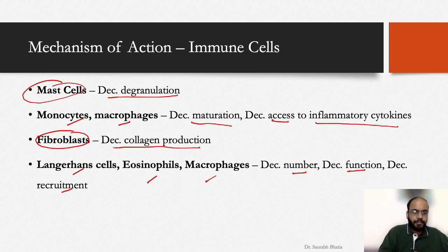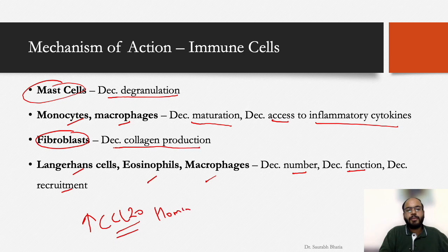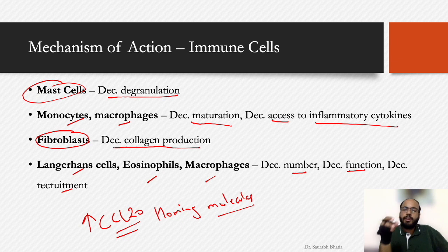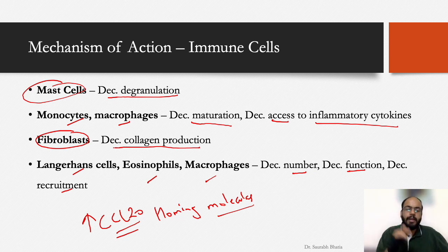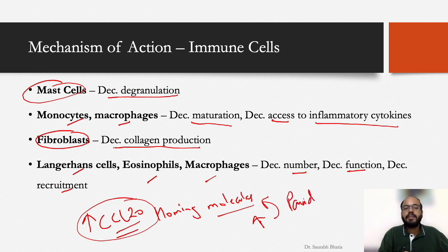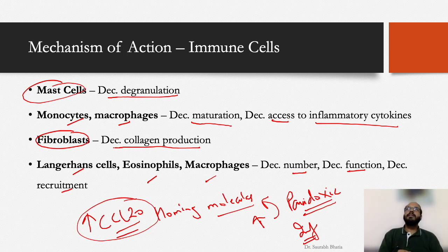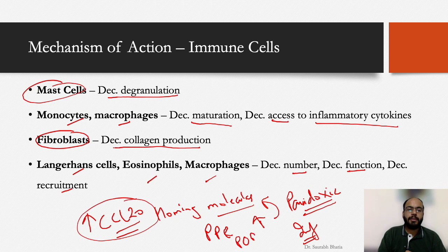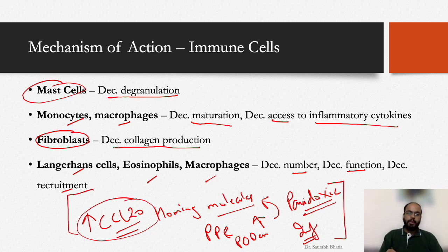One more important action: steroids increase production of CCL20, a homing molecule that guides inflammatory cells towards the skin. This paradoxically increases inflammation — a mechanism proposed to explain the increased inflammation seen in papulopustular rosacea and periorbital dermatitis, which sometimes flare when steroids are given. This is a counterintuitive, paradoxical mechanism of steroid-induced inflammation via increased CCL20 production.